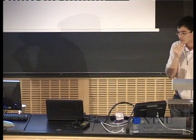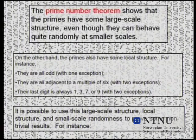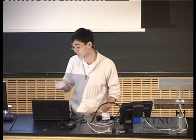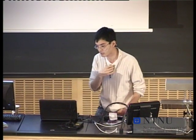So that's the prime number theorem. It tells you that, in some sense, the primes do have some large-scale structure. I can't tell you what the nth prime is, but I can tell you roughly what it is, and because of that, I can tell you, for example, roughly how many primes there are between one and one trillion. It's hard to get an exact count, but I can give you an approximate count. So I know things like the rough density — I can approximately say the density of the primes in any given region.